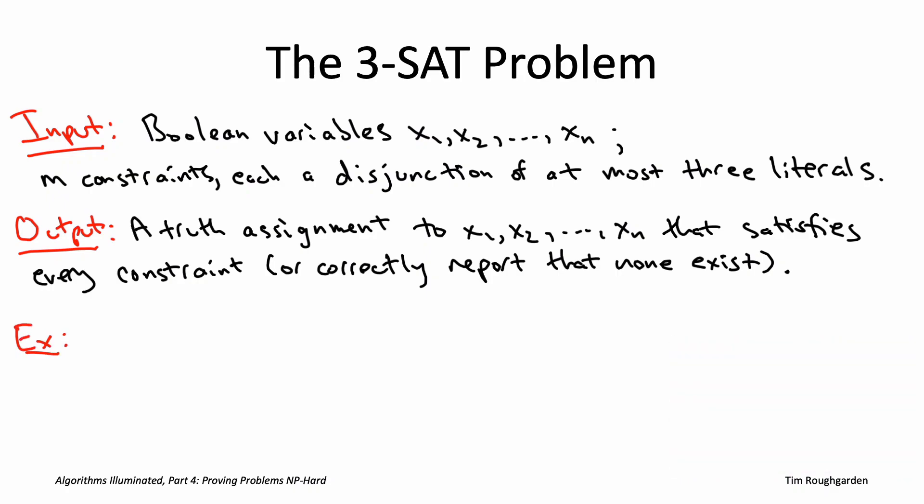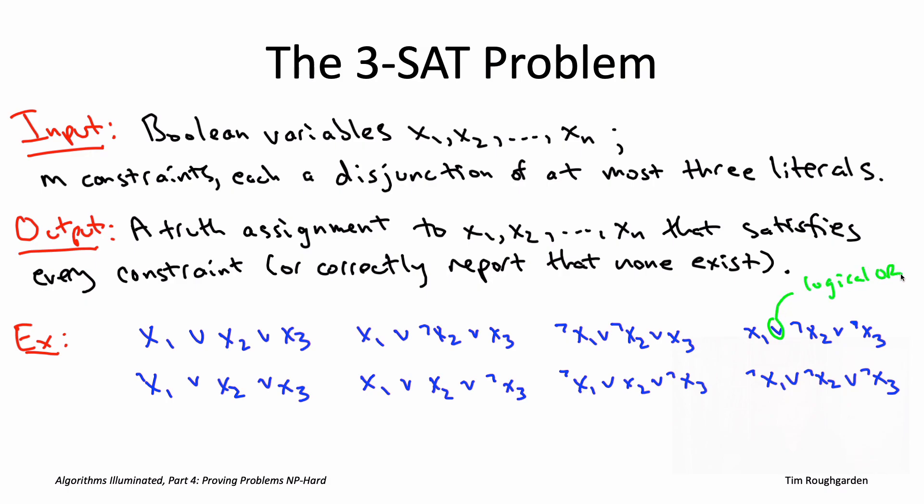For example, consider the following eight constraints. Just to be clear on the notation, this v that appears between each pair of literals stands for logical or, which is what disjunctions are all about. Whenever you see that upside down L in front of a variable, that means we're looking at the negation. So here in the upper right of the constraints, there is a not X2 and also a not X3. If this was the input - these three variables X1, X2, and X3, and these eight clauses, each with three literals - this would be an unsatisfiable 3SAT instance. There's no satisfying truth assignment.